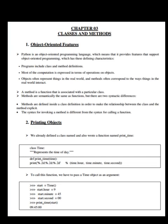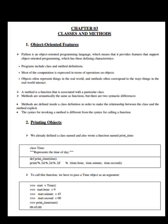Now let us see classes and methods. Python is an object-oriented programming language, which means it provides features that support object-oriented programming. Programs include class and method definitions. Most of the computation is expressed in terms of operations on objects. Objects often represent things in the real world and methods often correspond to the ways things in the real world interact. A method is a function that is associated with a particular class. Methods are semantically the same as functions, but there are two syntactic differences: methods are defined inside a class definition, and the syntax for invoking a method is different from calling a function.